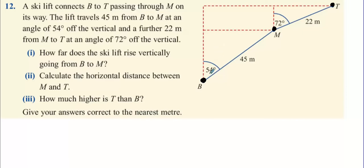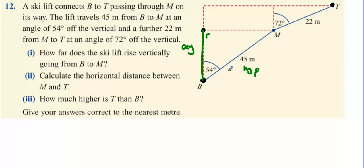When talking about the vertical level, we transfer M directly across like so — we're talking about this vertical level here. So we're essentially figuring out this green line here. Now remember it's a right angle triangle: the 45 is the hypotenuse, this green side will be the adjacent. So we're using the hypotenuse and the adjacent, which means we're going to use cosine.